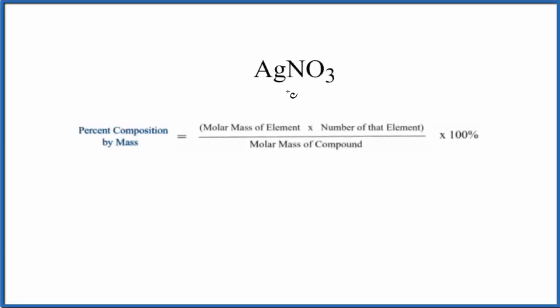In this video, we'll find the percent composition by mass of each element in AgNO3. This is silver nitrate.